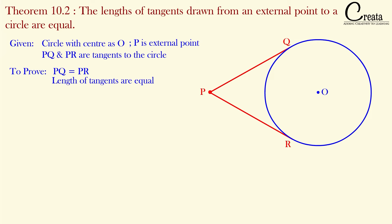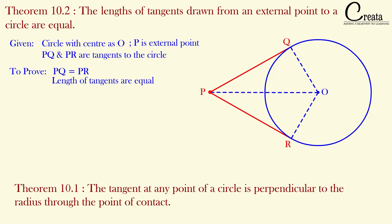In the construction portion, let's join OQ, OP, and OR — these three line segments we have joined. Are you able to observe the two triangles? These are the two triangles that will be used in this theorem. Moving further, in the previous theorem, Theorem 10.1, we have shown that the tangent to any point of a circle is perpendicular to the radius through the point of contact.